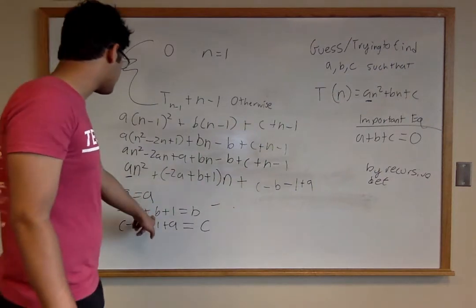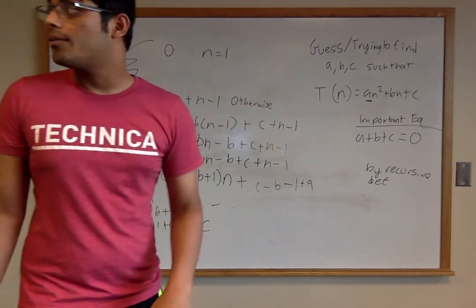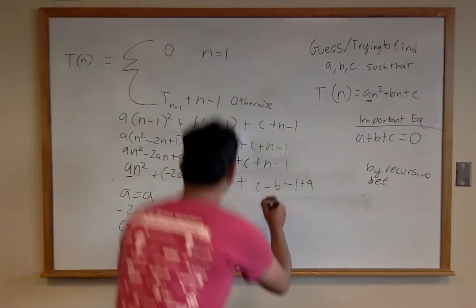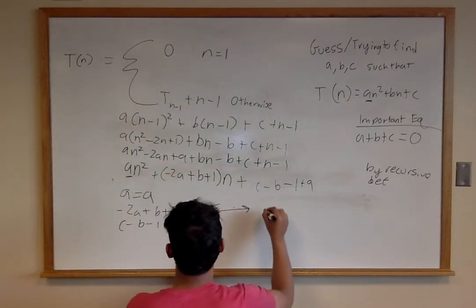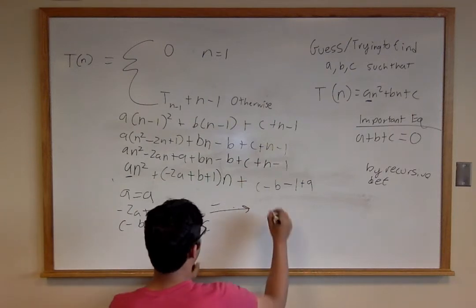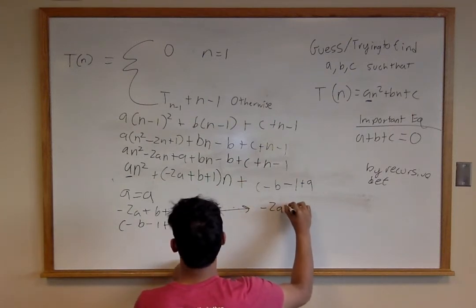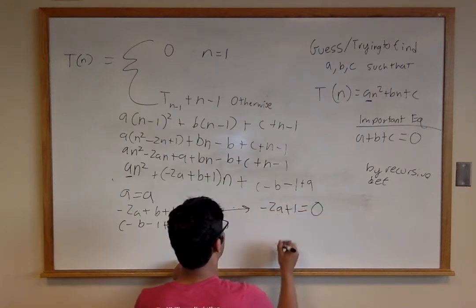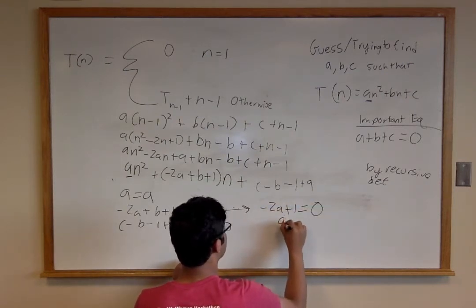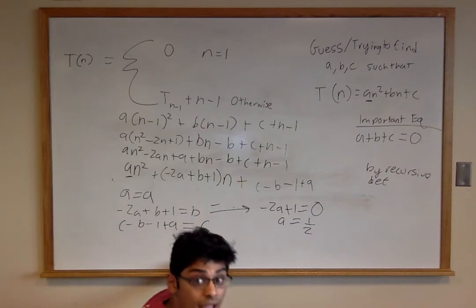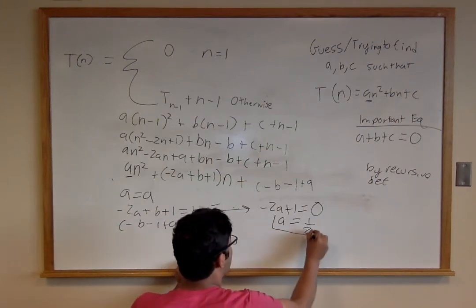First, notice we can cancel the b from both sides of -2a + b + 1 = b, giving us -2a + 1 = 0, which means a = 1/2. Perfect, so we know a equals one-half.